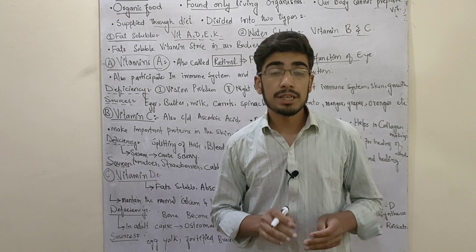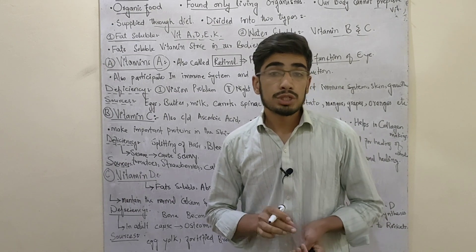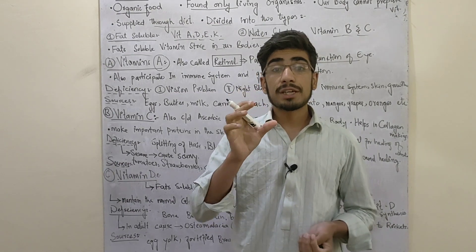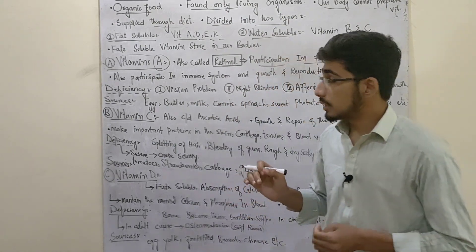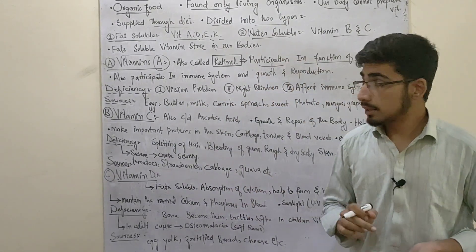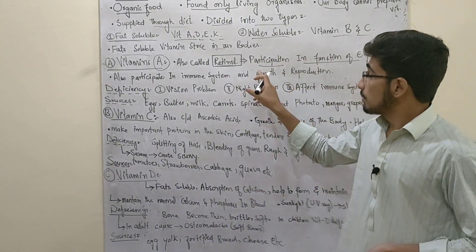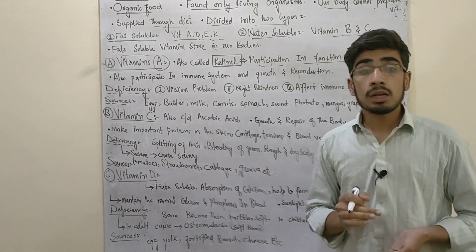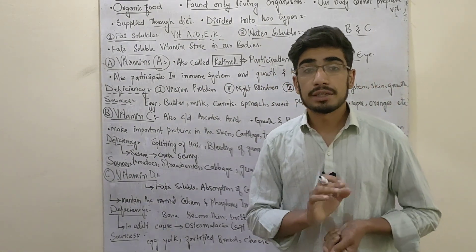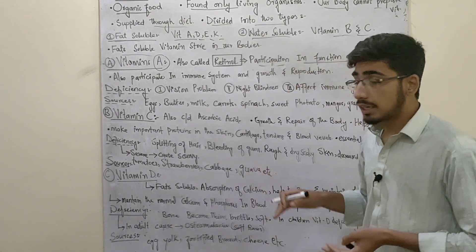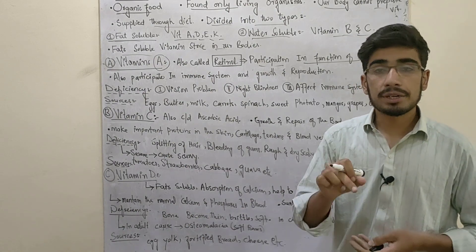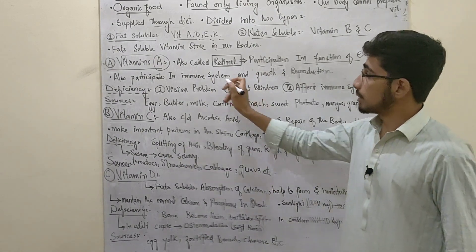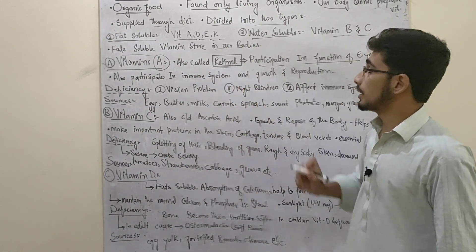The skin and the ring of the eye is the retina. When vitamin A is involved, it means participation of the eye — it helps in the function of the eye in the retina.